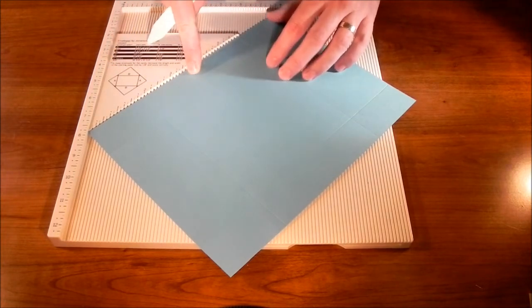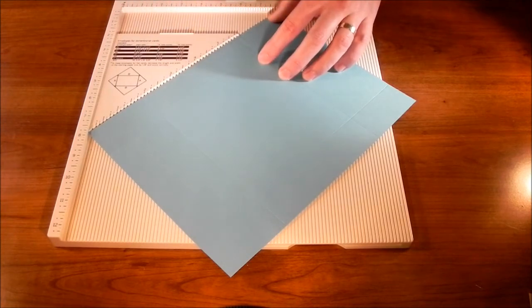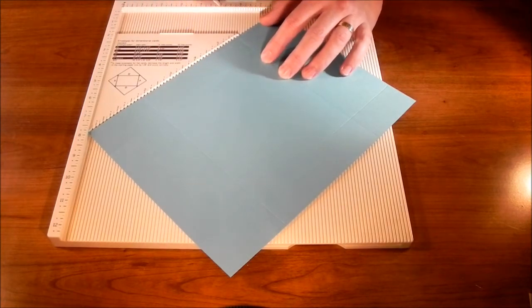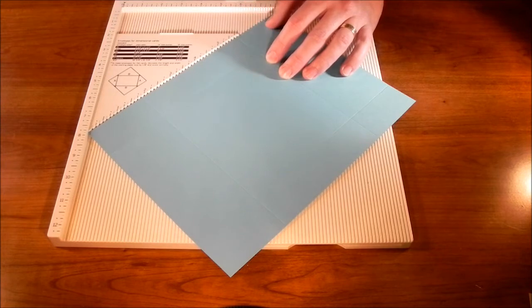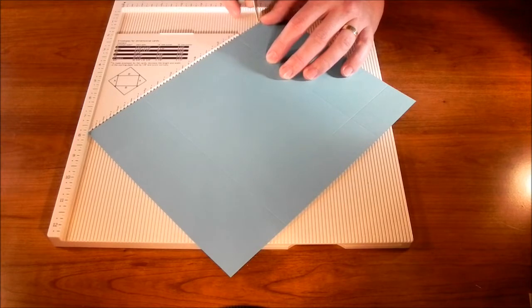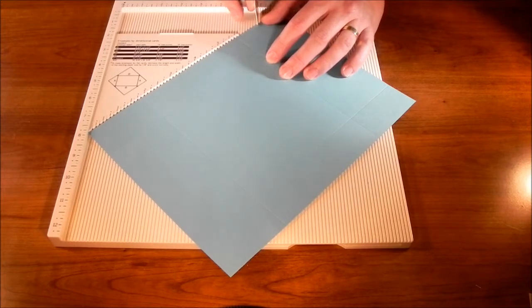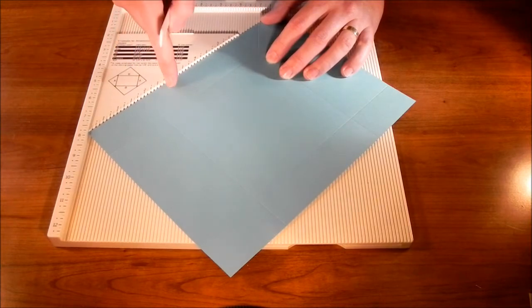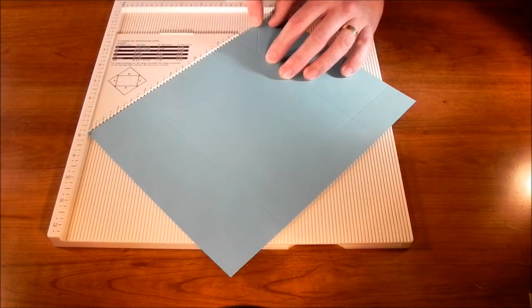Now leave the cardstock exactly where it is, because now we need to make a score line on this part, and we're going to do that at 6 and 7/8 along the horizontal. So just take your score line from there, start scoring, and we're going to again score it right to where the horizontal and vertical lines meet. Okay, so we've got one here and one here. This one's at 3, this one's at 6 and 7/8.